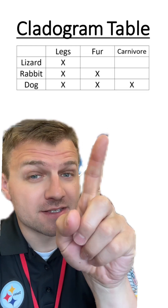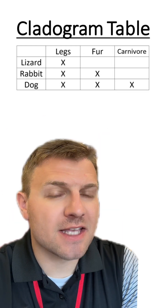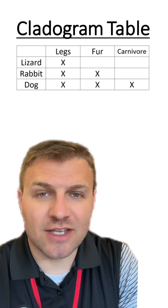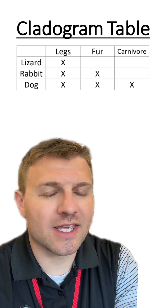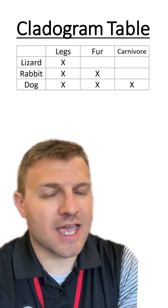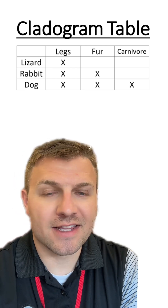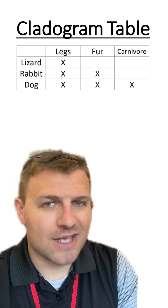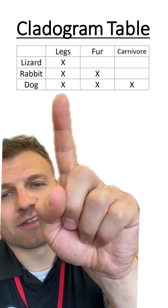You make a cladogram using this table. Each X in the table represents that species having that trait. I like to start out cladograms by looking at what trait all of the species have in common. This is otherwise known as the ancestral trait. And as you can see, all of the organisms have legs.